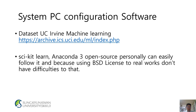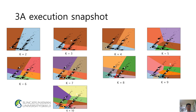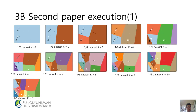Execution snapshots for 3a: K=2, K=3, K=4, K=5, K=6, K=7, K=8, K=9, and K=10 results. For the second paper, 3b execution using the 8-per-1 dataset: K=1 through K=10 results are shown.